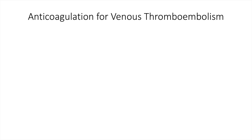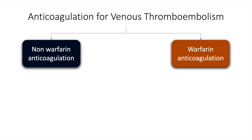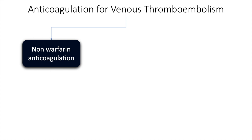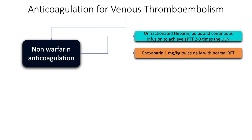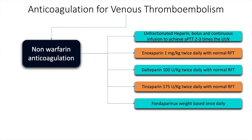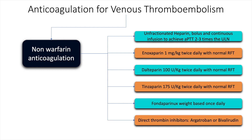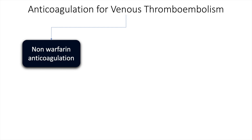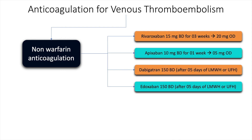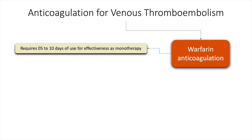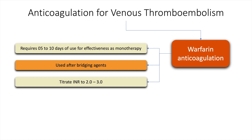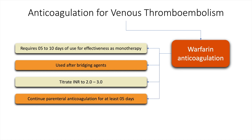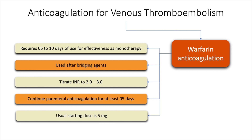Anticoagulation for venous thromboembolism may be non-warfarin or warfarin-based. Non-warfarin options include unfractionated heparin targeting aPTT of two to three times the upper limit of normal, enoxaparin, dalteparin, tinzaparin, fondaparinux, and direct thrombin inhibitors argatroban and bivalirudin. Other options include rivaroxaban, apixaban, dabigatran, and edoxaban. Warfarin-based anticoagulation requires five to ten days of use for effectiveness; it is usually used after bridging agents, titrating INR of two to three. Parenteral anticoagulation must be continued for at least five days, and the usual starting dose of warfarin is five milligrams.